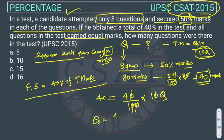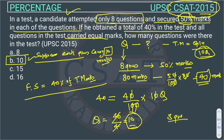The zeros cancel out on both sides, giving us Q = 40 divided by 4, so Q equals 10. There are 10 questions in the exam and he attempted 8, so the answer is Option B. This is an easy question — if you still have any problem, comment or call and I will explain personally.